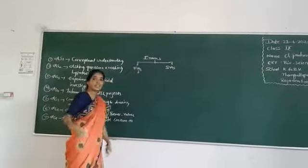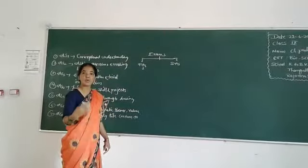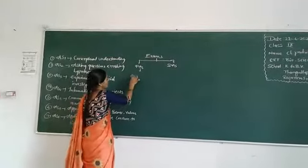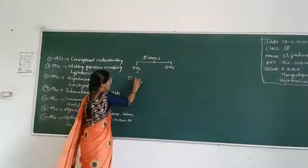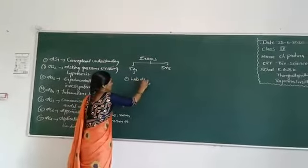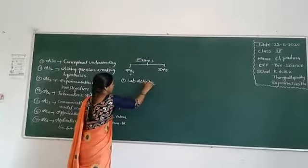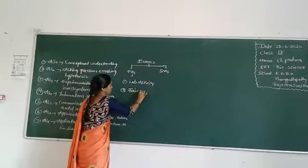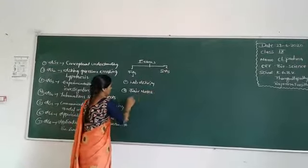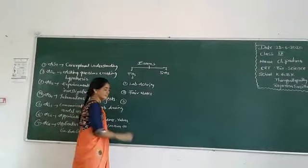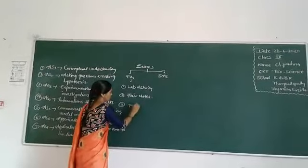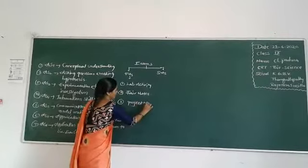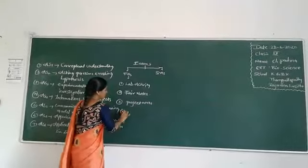One FA consists of how many tools? There are four tools. First, lab activities. Second, fair notes. Third, project works. Fourth, skill case.